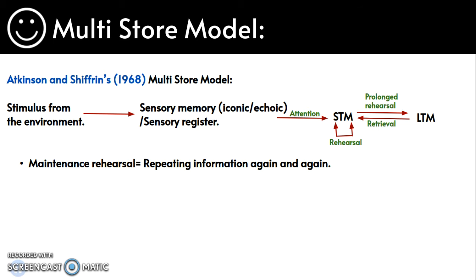You get a stimulus from the environment, and this gets into sensory memory, which can be iconic or echoic. Iconic means visual information is coded visually, and echoic refers to sound — information coded acoustically. If you pay attention to this, it goes into your short-term memory where you have to rehearse it. Prolonged rehearsal results in it going into your long-term memory.